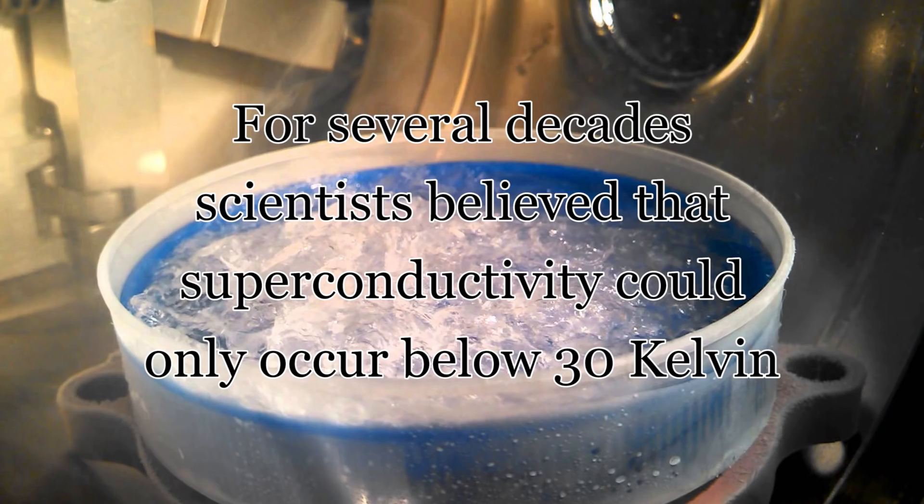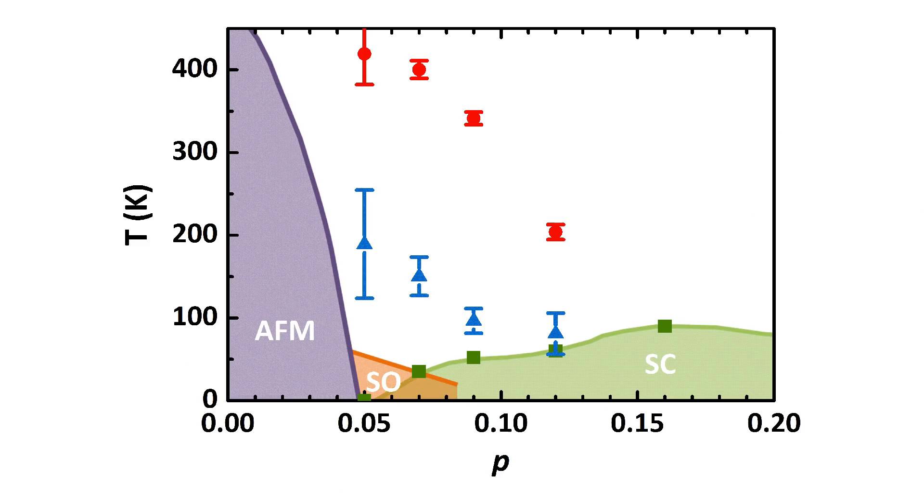For several decades, scientists believed that superconductivity could only occur at extremely low temperatures, specifically below 30 degrees Kelvin. However, in the 1980s, it was discovered that certain materials could function as superconductors at temperatures well above the critical temperatures theoretically possible.